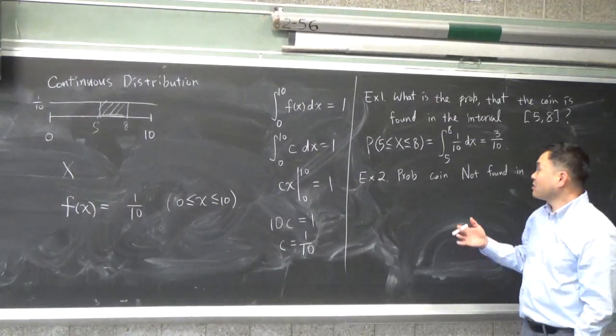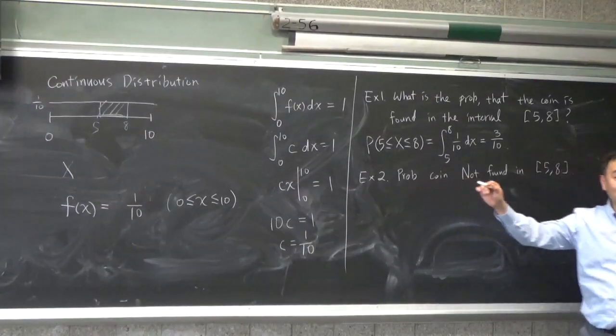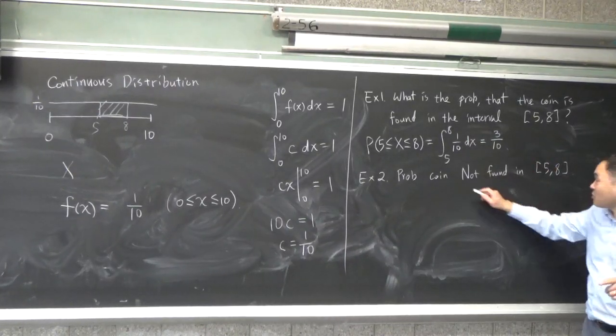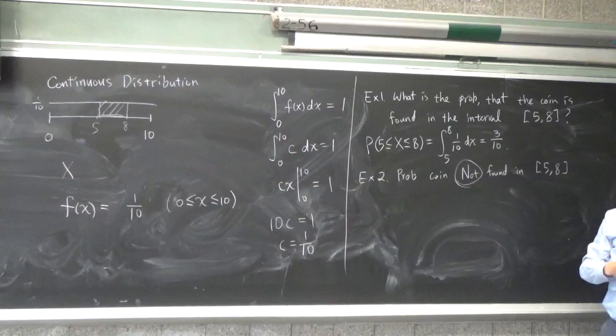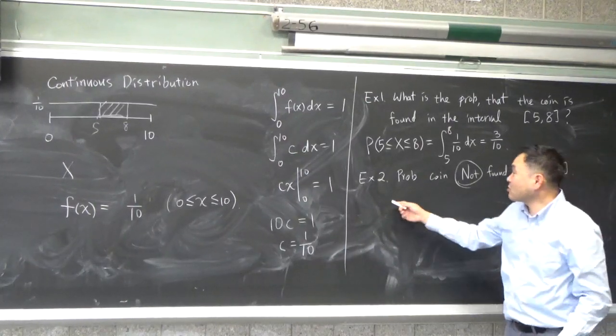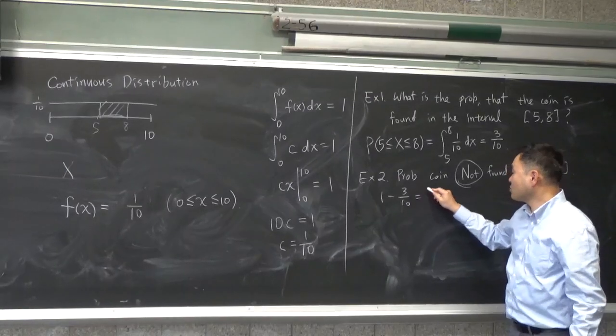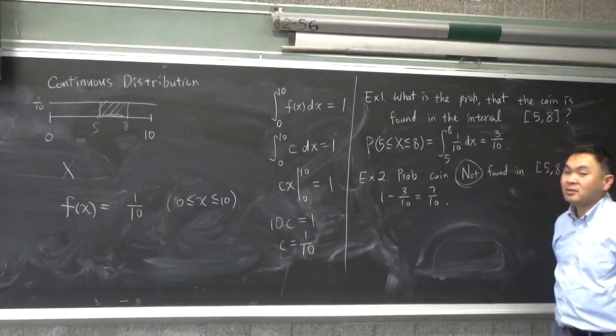Because, out of all the possibilities, from 0 to 10, when you see not, that means you subtract from 1. So, the answer is simply 1 minus 3 tenths, which is 7 tenths.